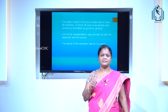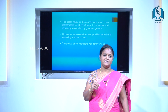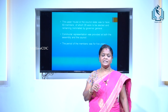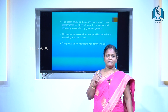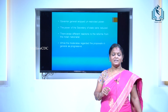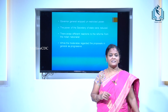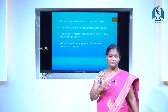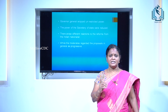Communal representation was given to both houses — the Legislative Assembly and the Legislative Council. The term of the members was for 5 years. The Governor General enjoyed unrestricted power, and the powers of the Secretary of State were reduced.